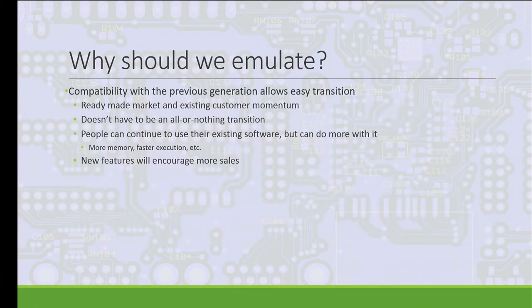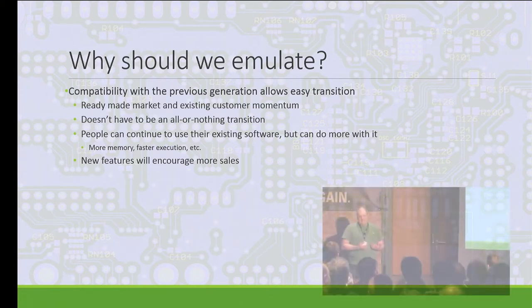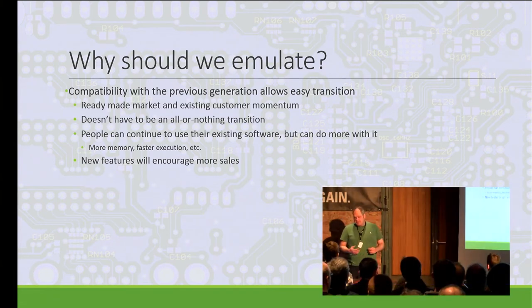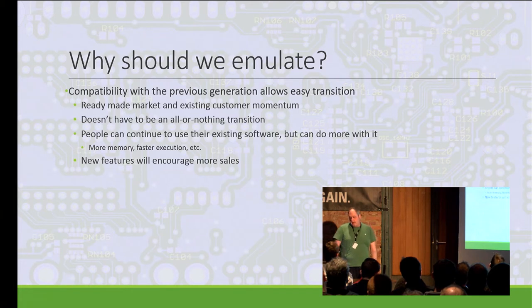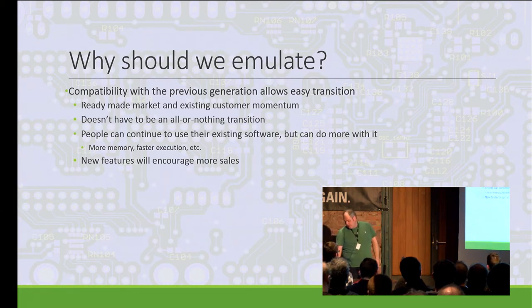Reasons why we'd want to emulate: if you're making a computer compatible with the previous generation, you've got a ready-made market and customer base. People can move on to the newer system gradually without ditching all their old software. With faster processors and more memory, they can do more. This encourages people to move to new hardware and then start using new features.